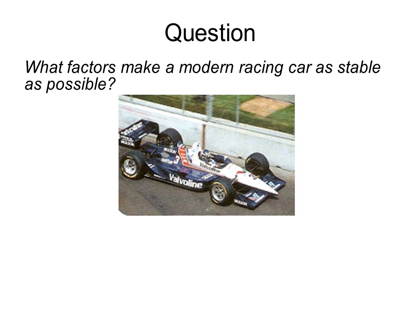So what makes a modern racing car stable as possible? There are two reasons: it has a wide wheelbase, it also has a low centre of mass. The centre of mass is going to be somewhere down here. If you could look at it from front on or back on, you would see that no matter how fast the racing car went and how much of a turn it went, the centre of mass would never fall outside the wheelbase area. So it's very, very stable.